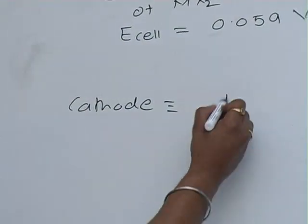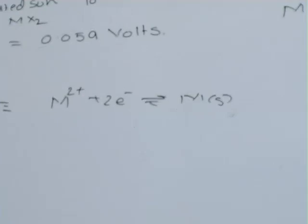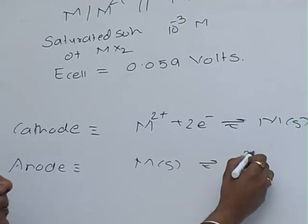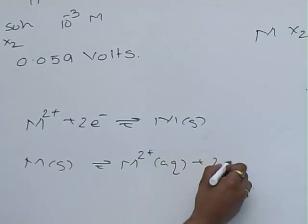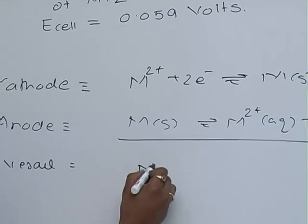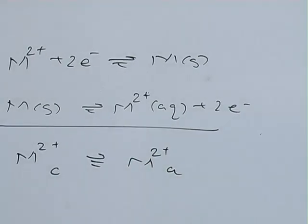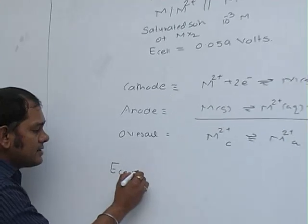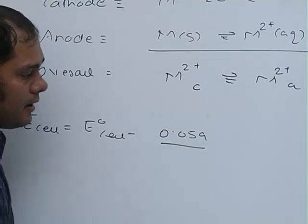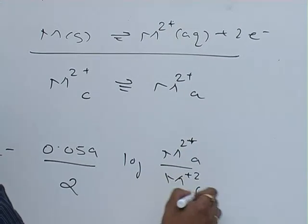At the cathode: M²⁺ plus 2 electrons gives us M solid. At the anode, the oxidation reaction is M solid gives M²⁺ aqueous plus 2 electrons. The overall reaction is M²⁺ at the cathode in equilibrium with M²⁺ at the anode. E_cell equals E°_cell minus 0.059 by 2 log of M²⁺ at anode upon M²⁺ at cathode.